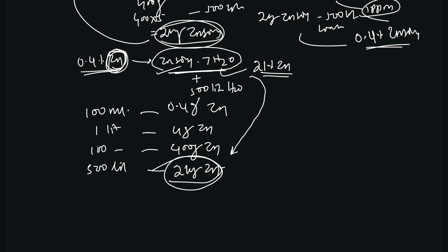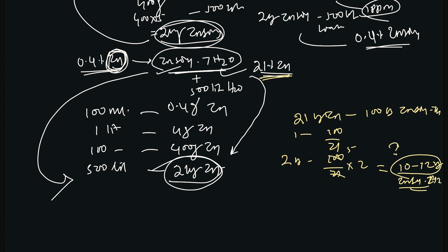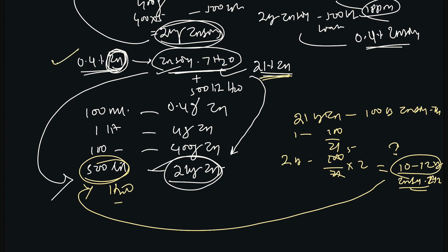Now, how much zinc sulfate heptahydrate is required to provide that 2 kg of zinc? Zinc sulfate heptahydrate (ZnSO₄·7H₂O) contains 21% zinc. So from 100 kg of zinc sulfate heptahydrate we get 21 kg of zinc. Therefore: 1 kg zinc comes from 100/21 kg zinc sulfate heptahydrate, and 2 kg zinc comes from (100/21) × 2, which is approximately 9.5 to 10 kg — so around 10 to 12 kg of zinc sulfate heptahydrate needs to be mixed with 500 liters of water to prepare the 0.4% zinc solution, and then applied over the field.